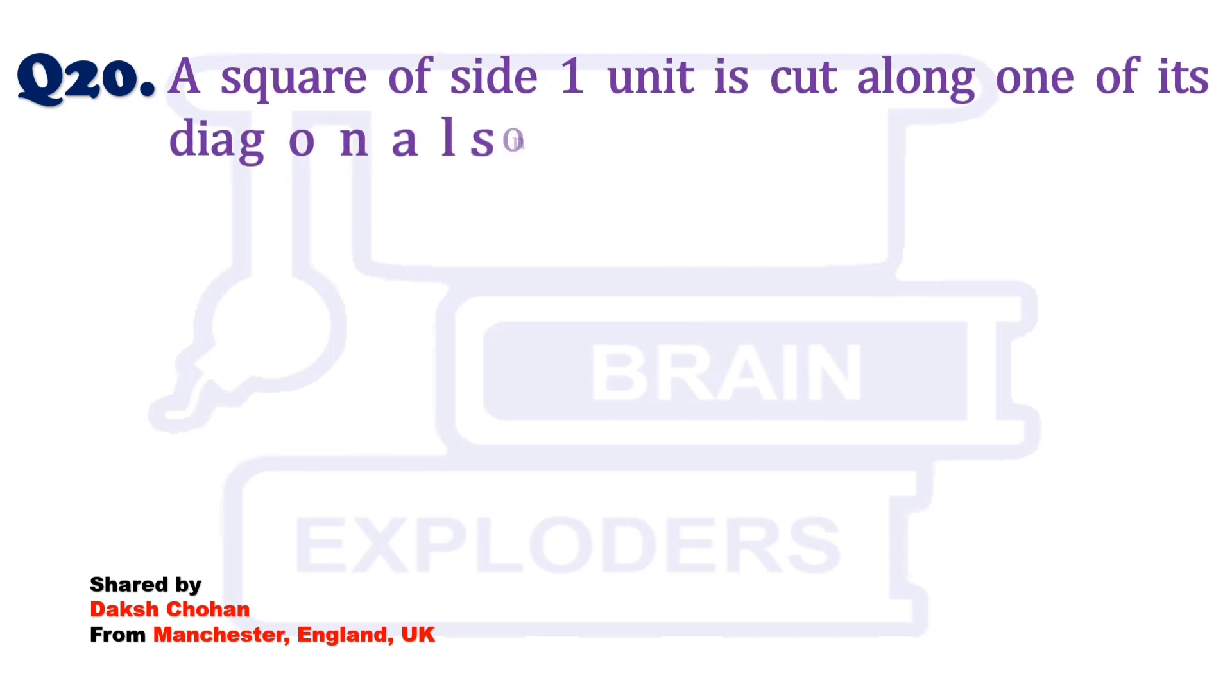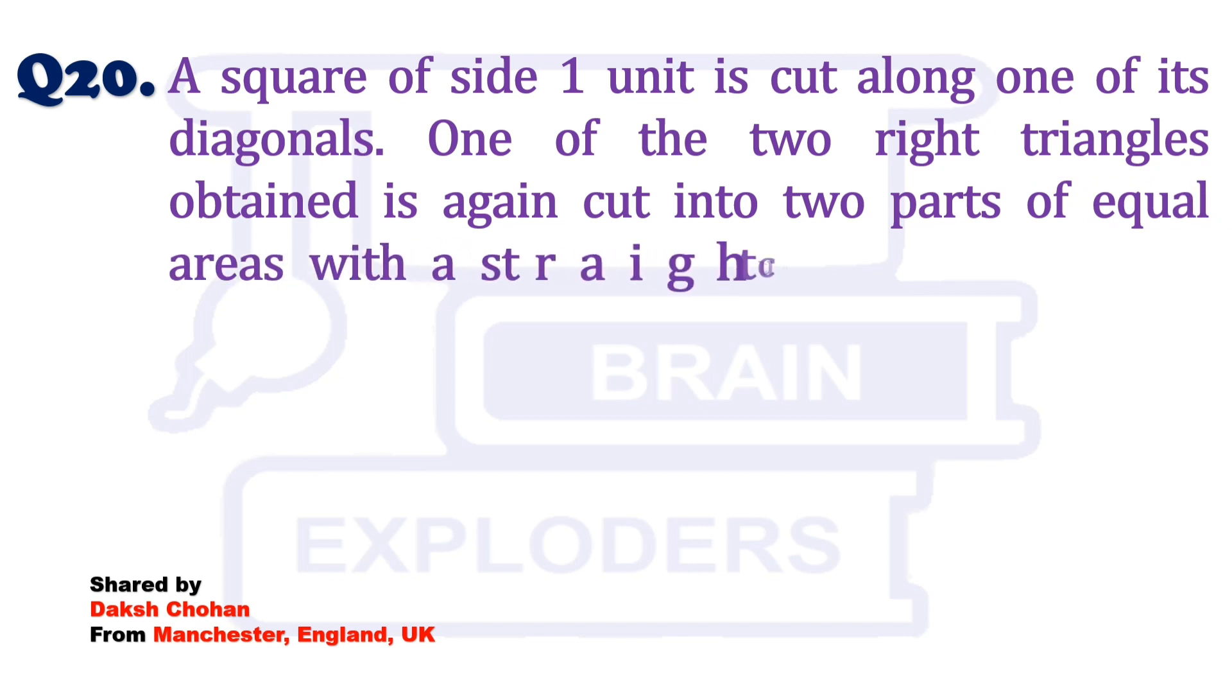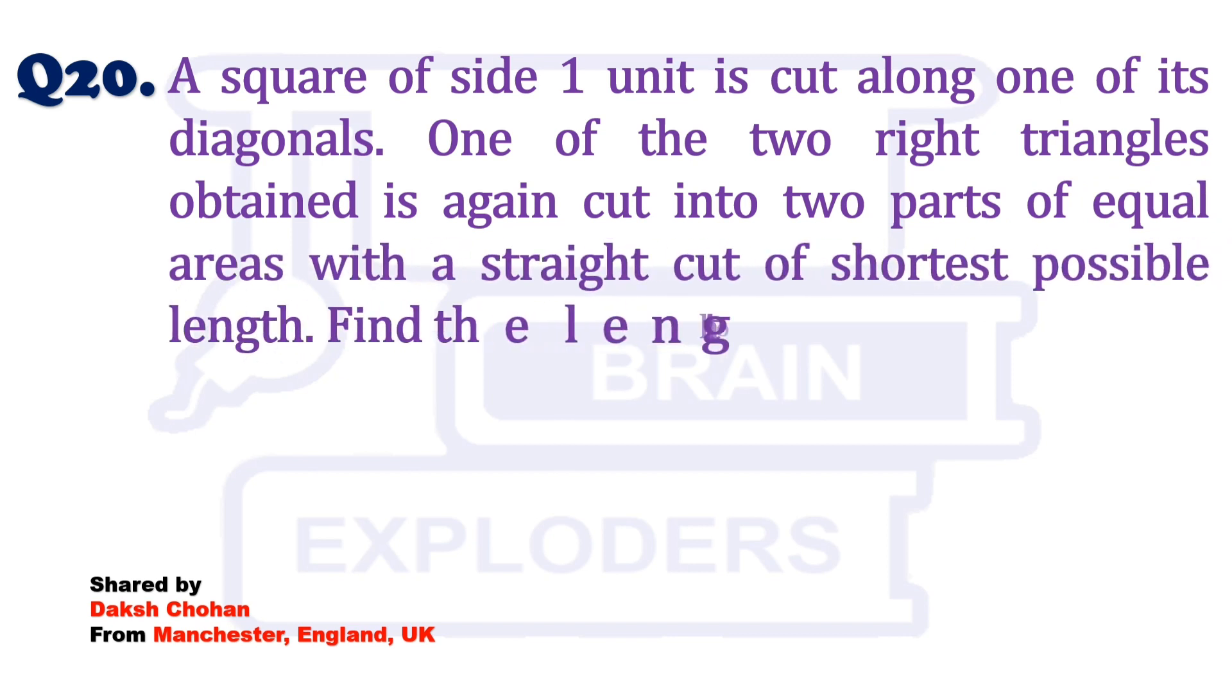A square of side 1 unit is cut along one of its diagonals. One of the two right triangles obtained is again cut into two parts of equal areas with a straight cut of shortest possible length. Find the length of this cut.